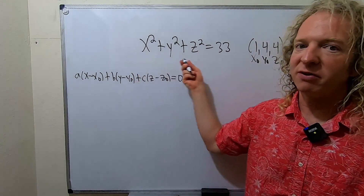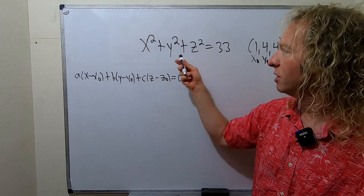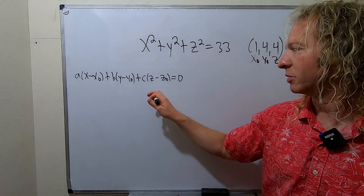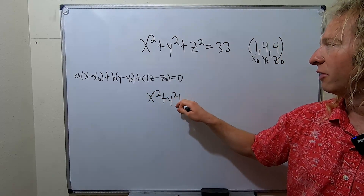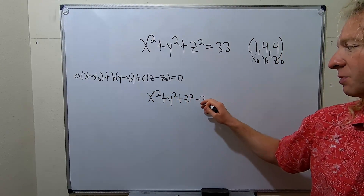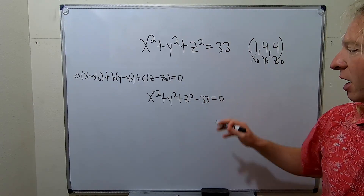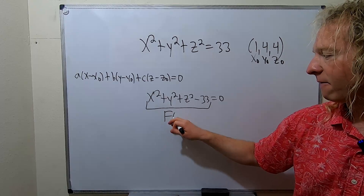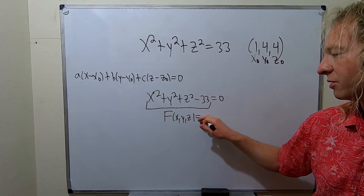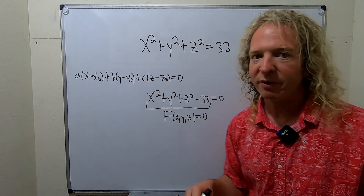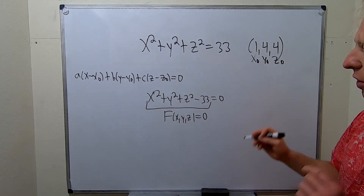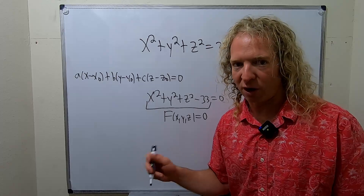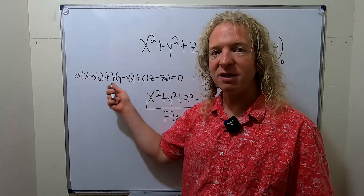In this problem we have this sphere. The first thing we want to do is set it equal to zero — that's always the first step when finding the tangent plane. So step one is subtract the 33. This gives us what's called a level surface: F(x, y, z) = 0. The gradient vector is always normal to your level surface, so the gradient will be our a, b, c.